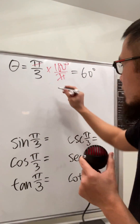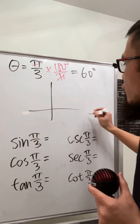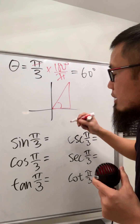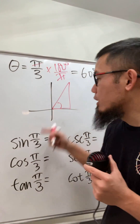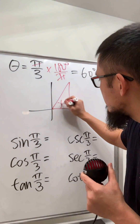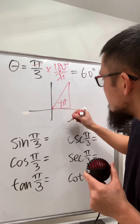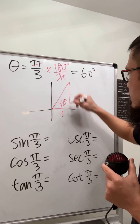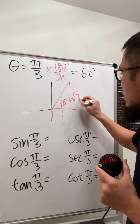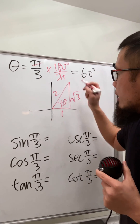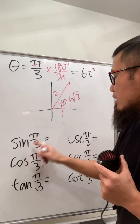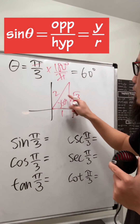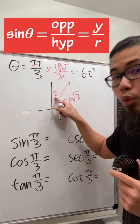We'll use the reference triangle method, so I'm going to draw the reference triangle with 60 degrees. You have to remember the special triangle 30-60-90, and the ratio of the sides is going to be 1, square root of 3, and 2. Now sine of π/3 is just opposite over hypotenuse.